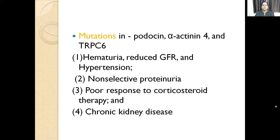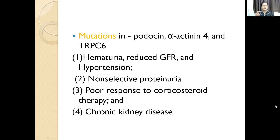If there is a mutation in nephrin, the gene that codes for nephrin is NPHS1. If there is a mutation in that gene, there will be congenital nephrotic syndrome of the Finnish type — minimal change. Remember: NPHS1 → congenital nephrotic syndrome. NPHS2 codes for podocin and if mutated, causes steroid-resistant nephrotic syndrome.